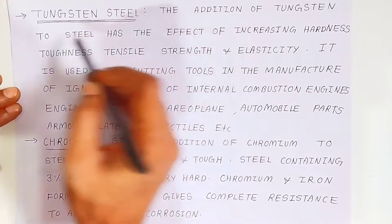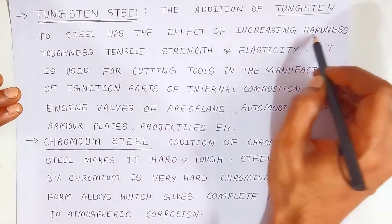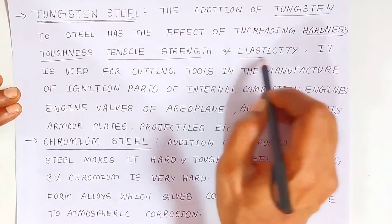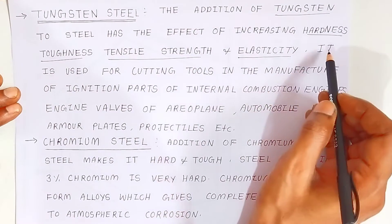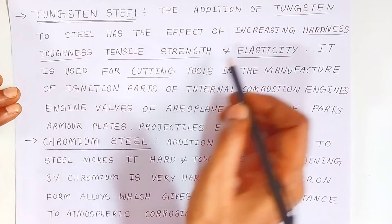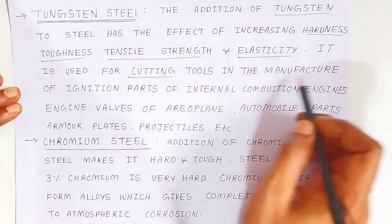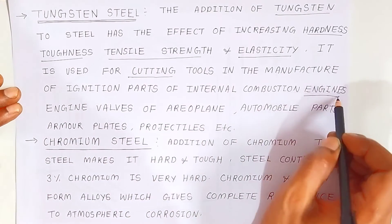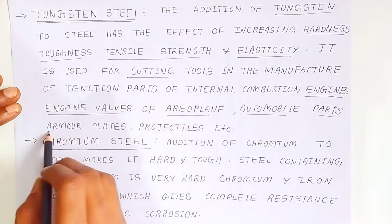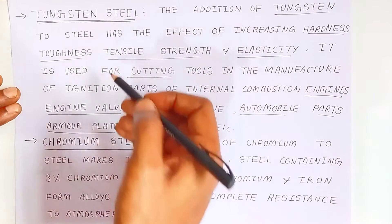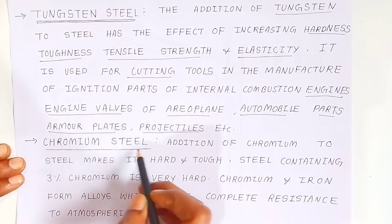Tungsten steel: the addition of tungsten to steel increases hardness, toughness, tensile strength, and elasticity. It is used for cutting tools, ignition parts of internal combustion engines, aeroplane engine walls, automobile parts, armor plates, and projectiles.